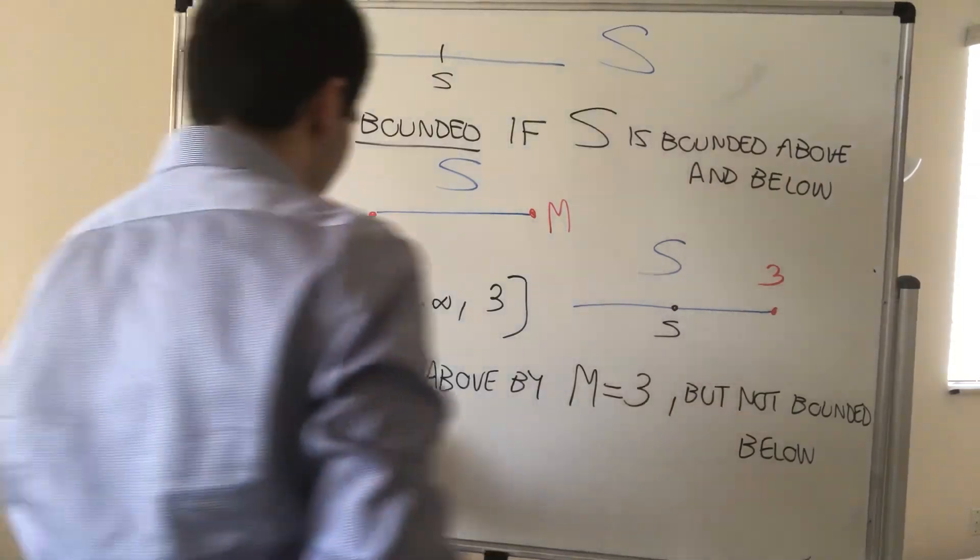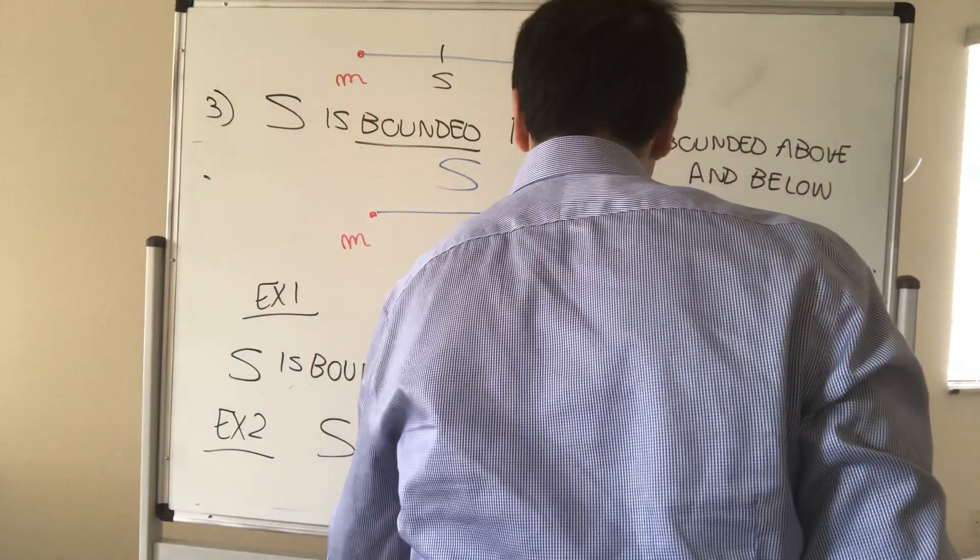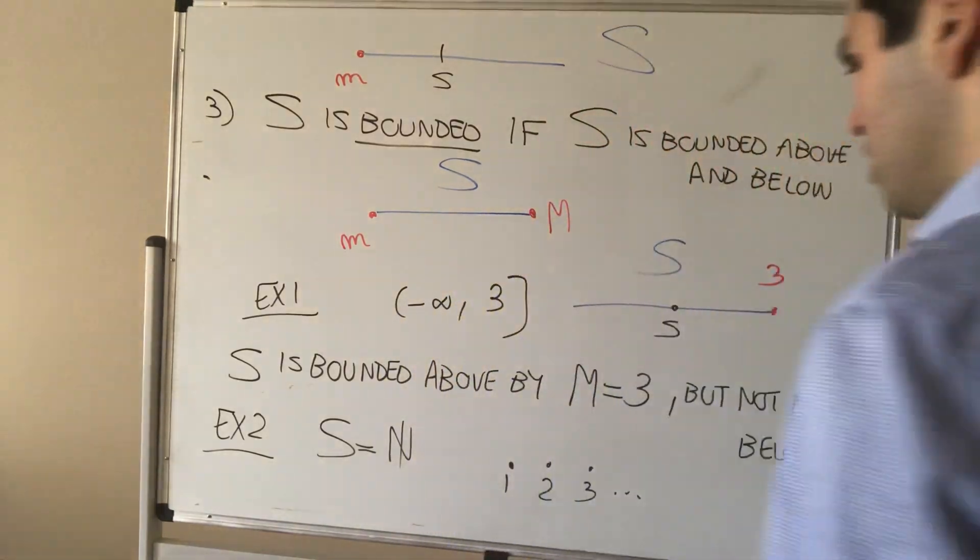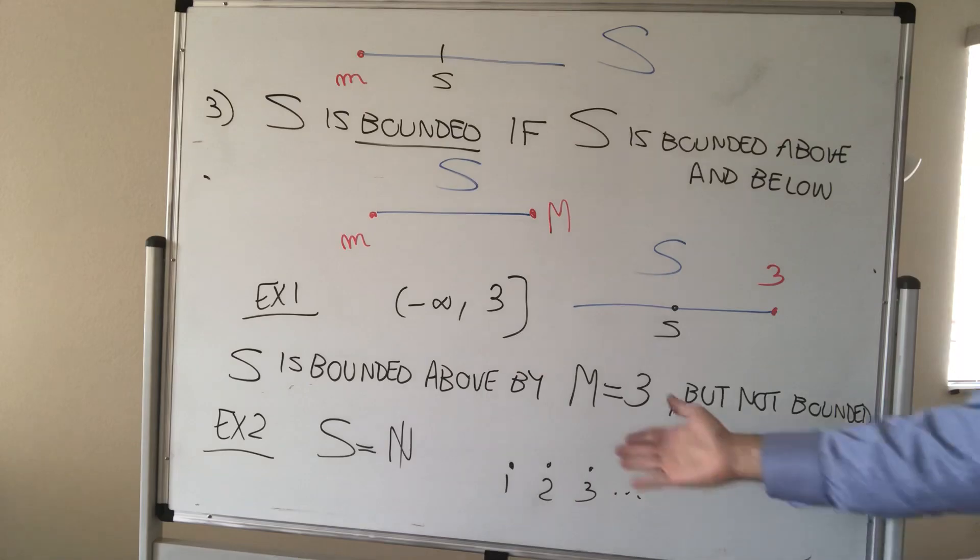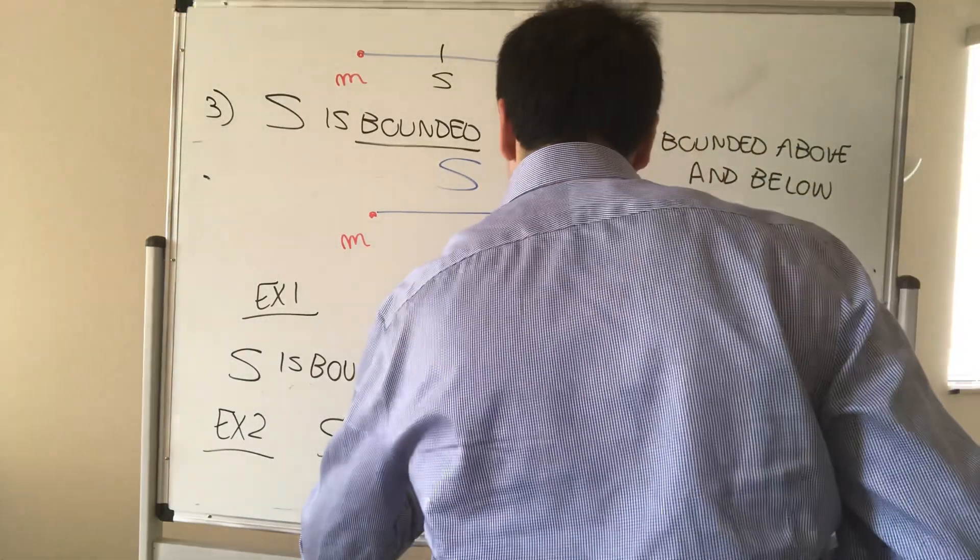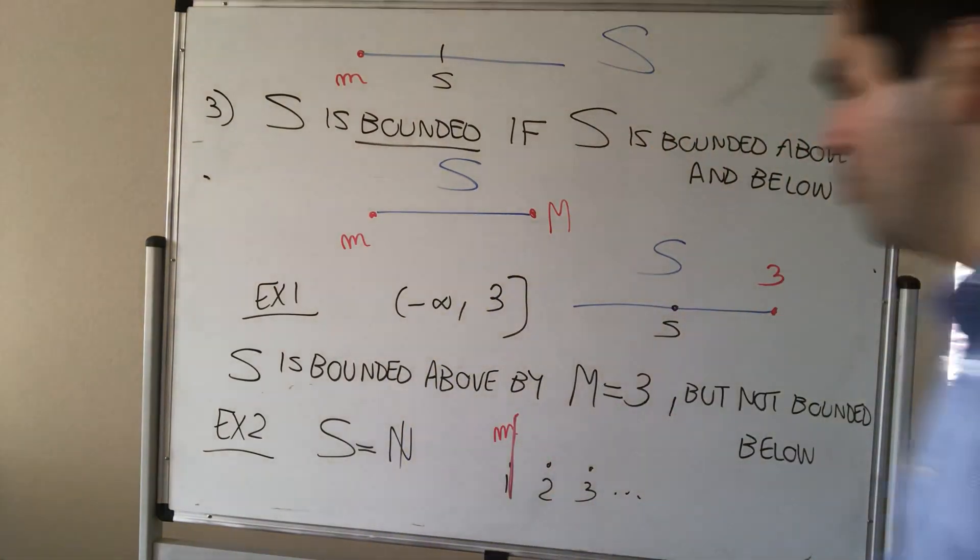Or another example, we have S to be the natural numbers. Again, one, two, three, dot, dot, dot. Then, well, notice S is bounded below by M equals one, because again, every natural number is greater or equal to one.